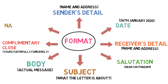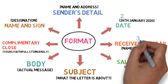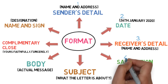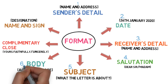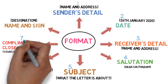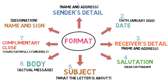Number 8 is the sender's name, signature, and designation. Here the name of the sender and his or her signature comes. Designation can also be added when required. So, this is the exact format. To revise: Step 1 — sender's details. Step 2 — date. Step 3 — receiver's details. Step 4 — salutation. Step 5 — subject. Step 6 — body. Step 7 — complimentary close. Step 8 — sender's name and signature. Designation can also be added when required.